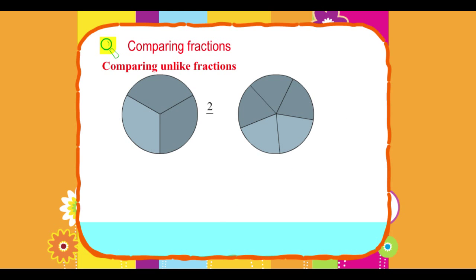2 upon 3, 2 upon 5. In the above example, 2 upon 3 and 2 upon 5 are unlike fractions with the same numerator. Hence, we will compare the denominators. 3 less than 5. Therefore,